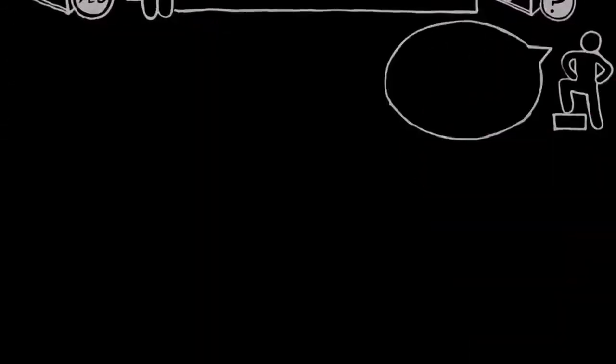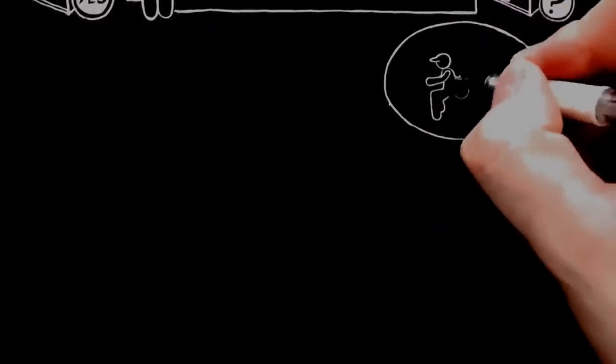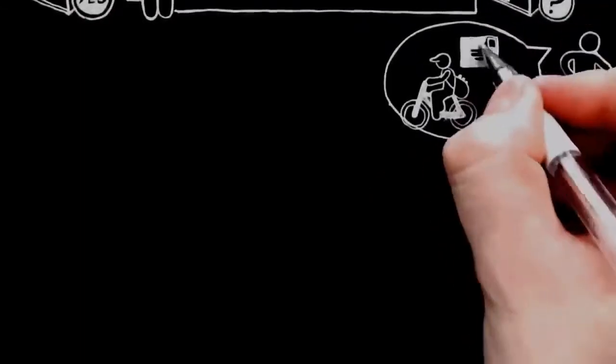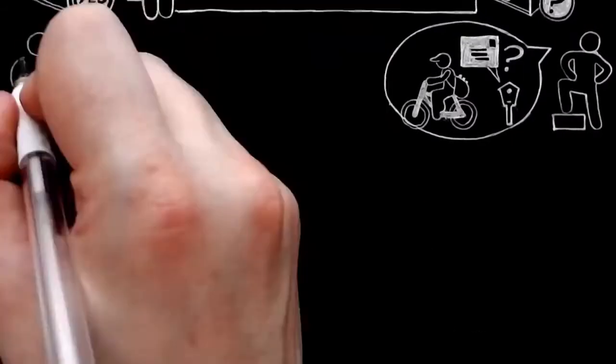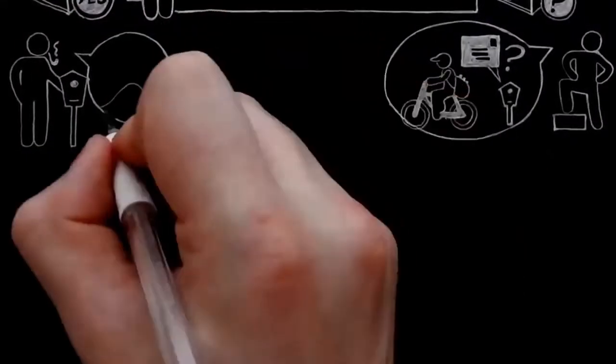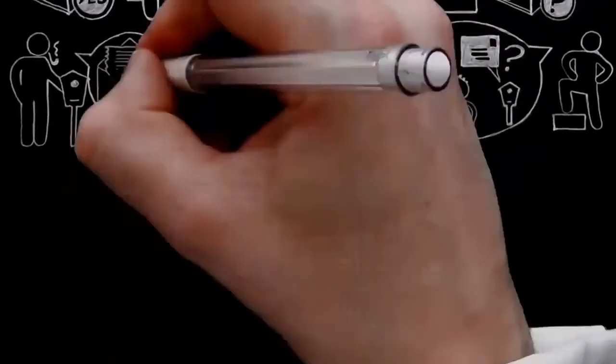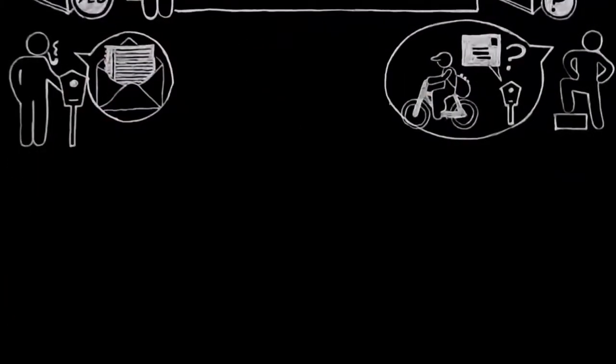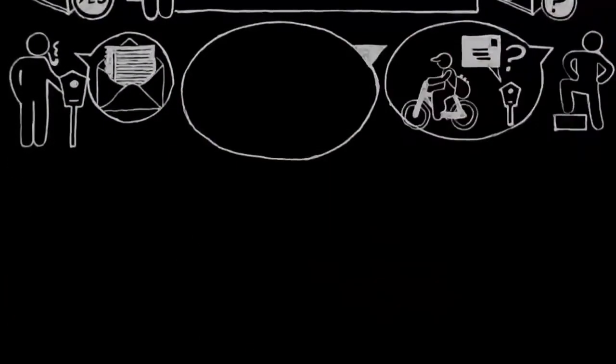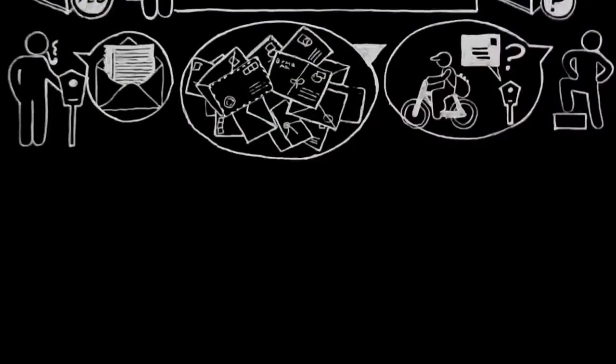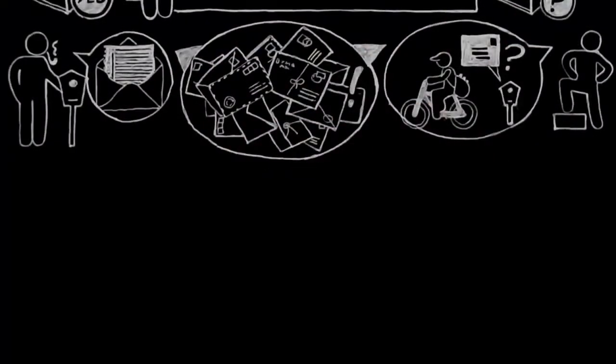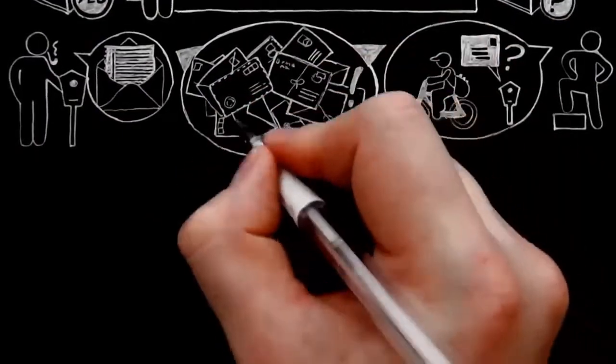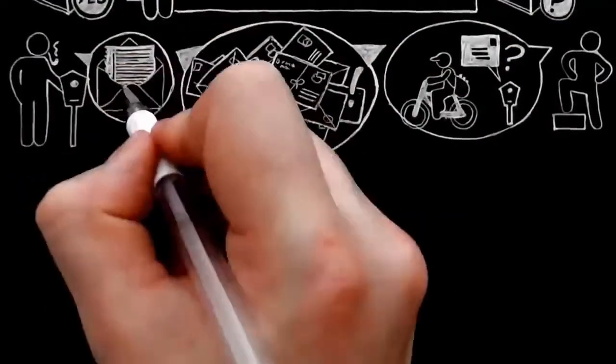Suppose someone asked me, when I see a man in a blue uniform going down the street, leaving little paper packets at each house, why I suppose that they contain letters. I should reply, because whenever he leaves a similar little packet for me, I find it does contain a letter. And if he then objected, but you have never seen all these letters which you think the other people are getting, I should say, of course not, and I shouldn't expect to, because they're not addressed to me. I'm explaining the packets I'm not allowed to open by the ones I am allowed to open.